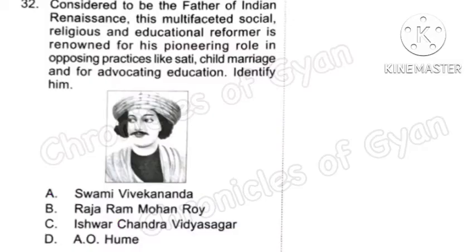Question 32: Considered to be the father of the Indian Renaissance, this multifaceted social, religious and educational reformer is renowned for his pioneer role in opposing practices like Sati and child marriage, and for advocating education. Identify him. The answer is Option B, Raja Ram Mohan Roy.